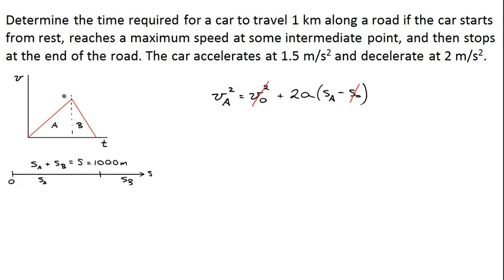I can also write something similar for v_b. The velocity at location b is at the end of period b. I can say the velocity at b squared is equal to the velocity at a squared plus 2 times the acceleration of braking, remember that's -2 m/s², multiplied by s, the final distance, minus s_a, the distance at which the brakes were first applied.